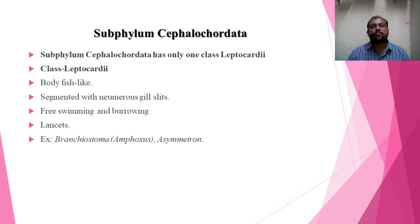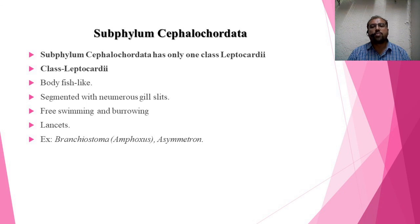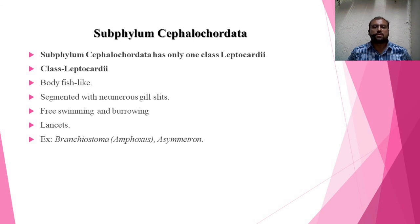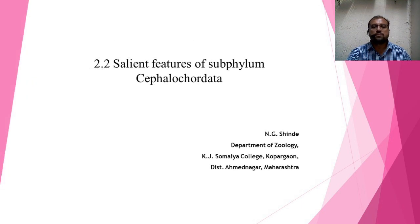All these Protocordates are primitive chordates because they possess the basic fundamental characters of chordates: the dorsal tubular notochord, the dorsal hollow nerve cord, and pharyngeal gill slits. I hope you understand all these characters of Hemichordata, Urochordata, and Cephalochordata. If you have any doubts, please comment in the comment box, subscribe to the channel, and press the bell icon for the latest videos of this S.Y. Zoology Animal Diversity Third paper. Thank you very much.